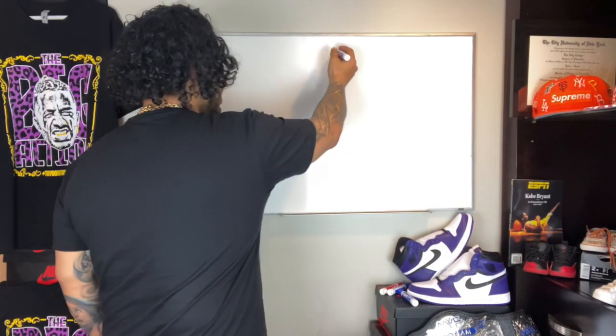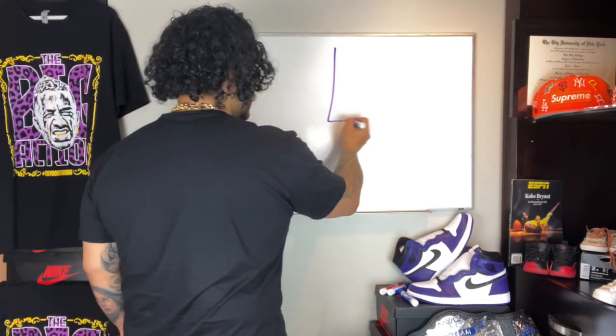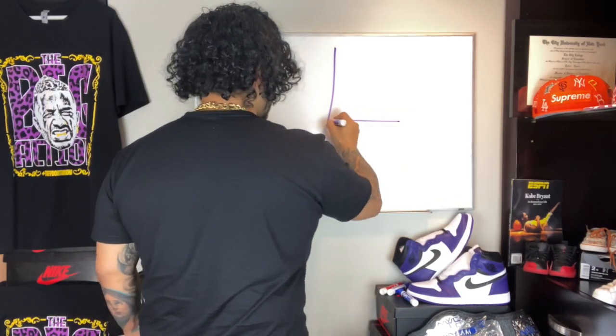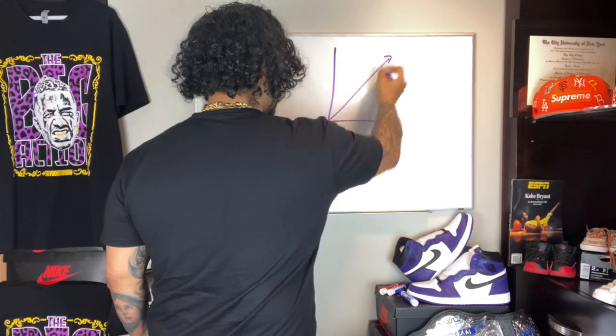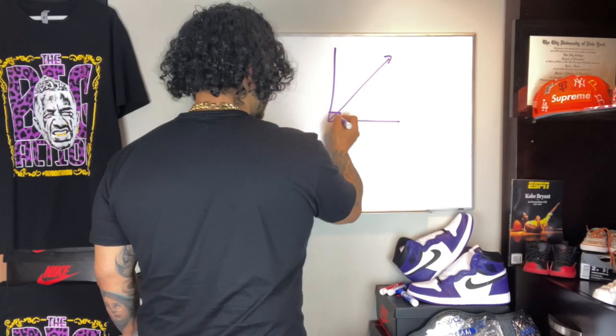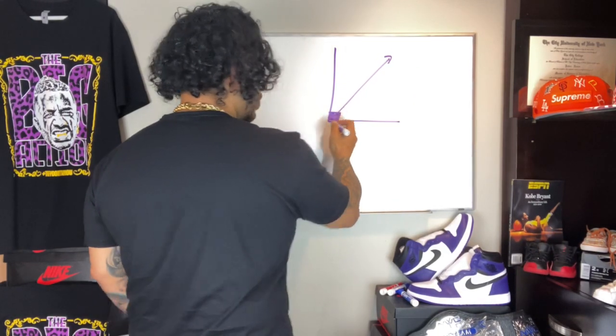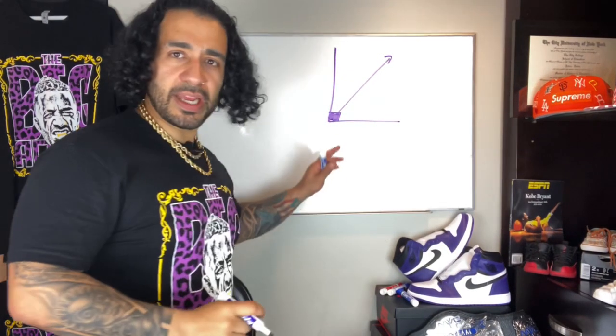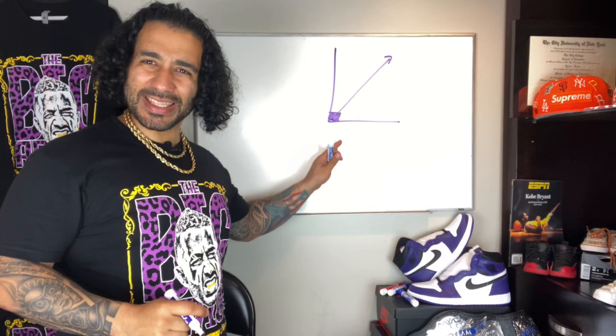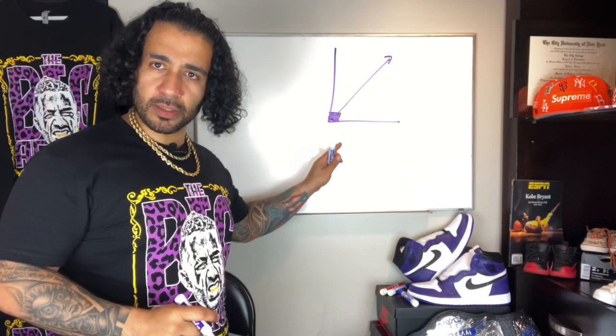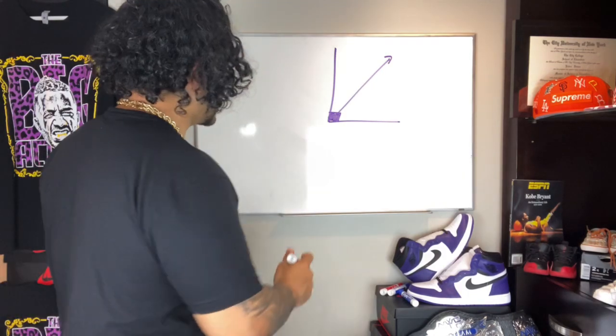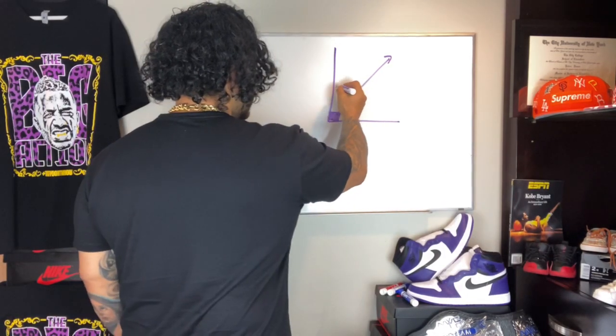...they add up to 90 degrees. So for example, let's say you have an angle right here. It's a 90-degree angle — that corner tells you 90 degrees.